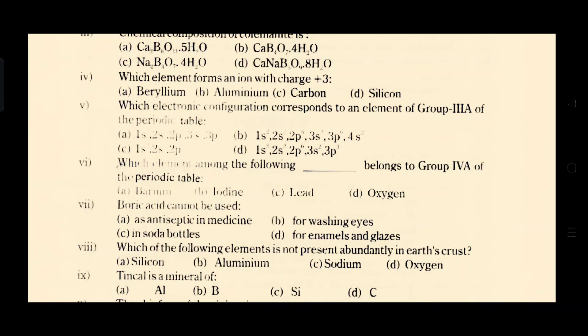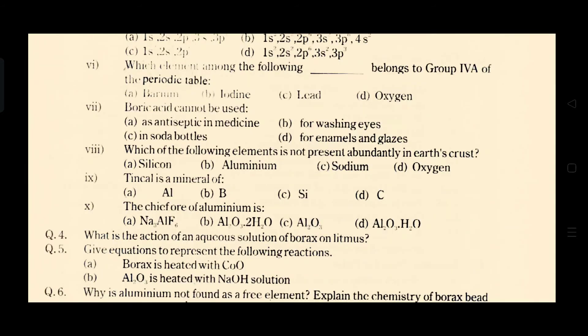Now the next one is which of the following element is not present abundantly in earth's crust? Option C is the correct option. Sodium is not present abundantly on the earth's crust as compared to the other 3 options. The ninth multiple choice is tinkle is a mineral of. We know that tinkle is the mineral of boron, so option B is the correct option.